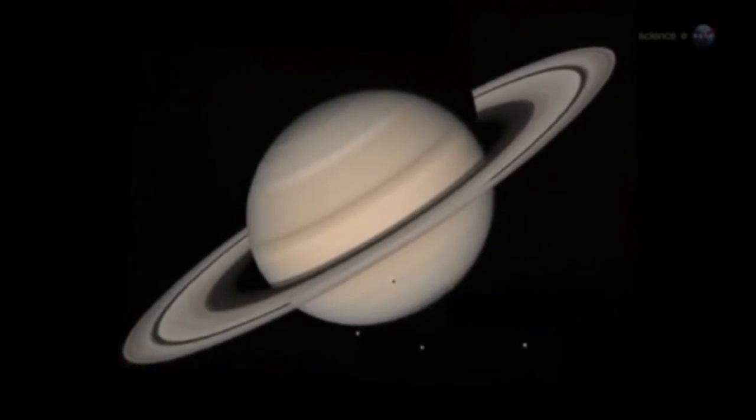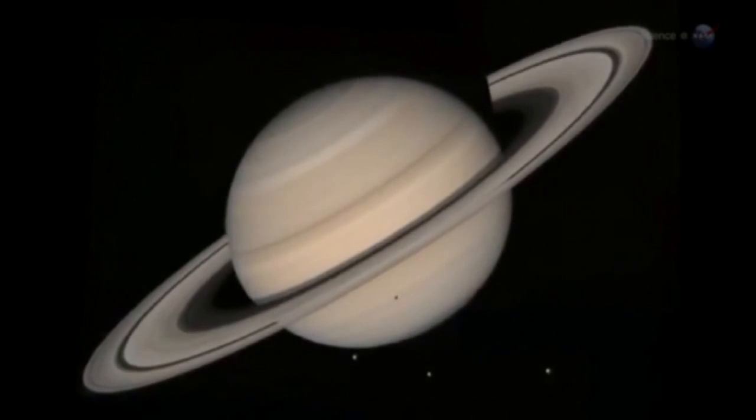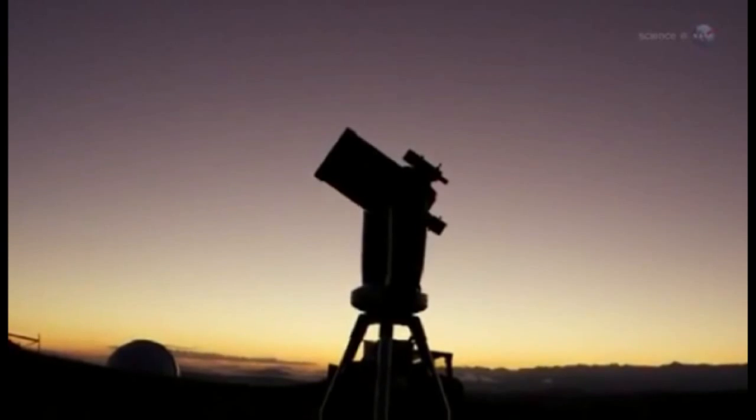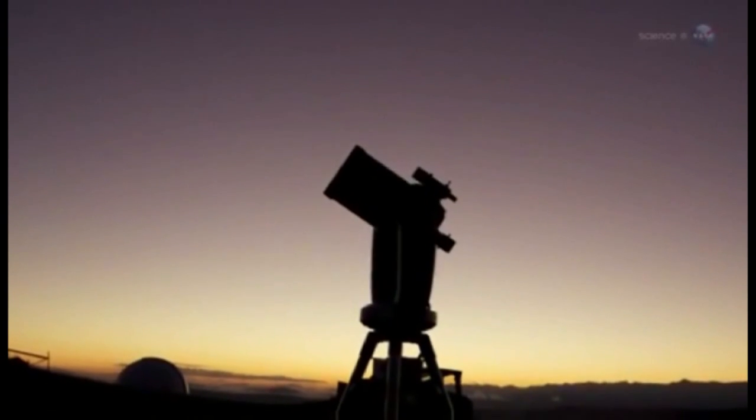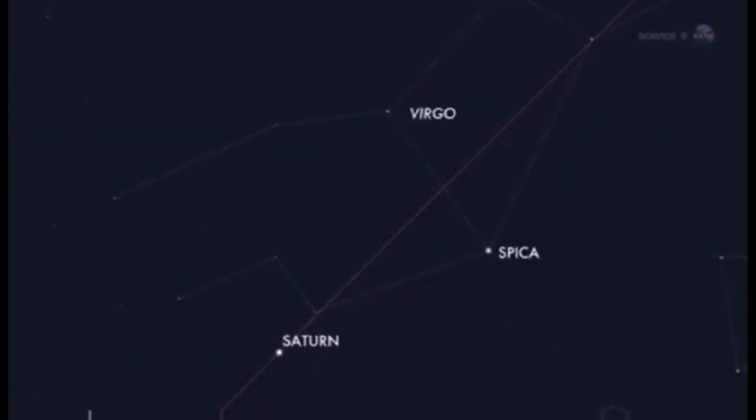Well, maybe just one more? Inhale deeply, because at the end of April, Saturn will put on a breathtaking display. No space probe is required to see it. Just set up a telescope in your backyard, even a small department store scope will do, and point the optics toward the constellation Virgo.